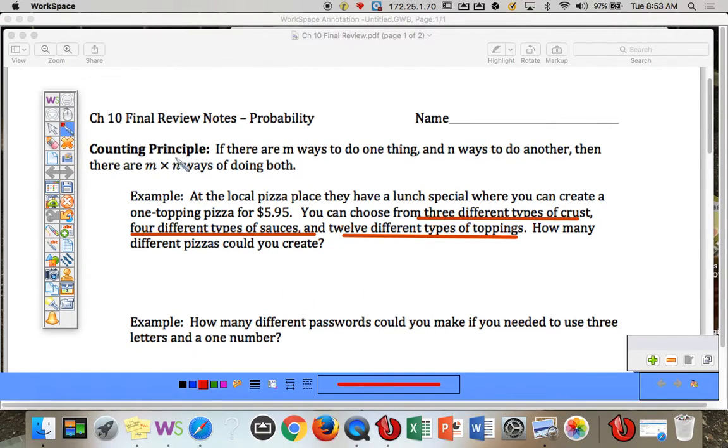So the counting principle says you can multiply those together. Three times four times 12 will give you 144 different types of pizzas. So there's the counting principle. If they're independent events, you can multiply them together.